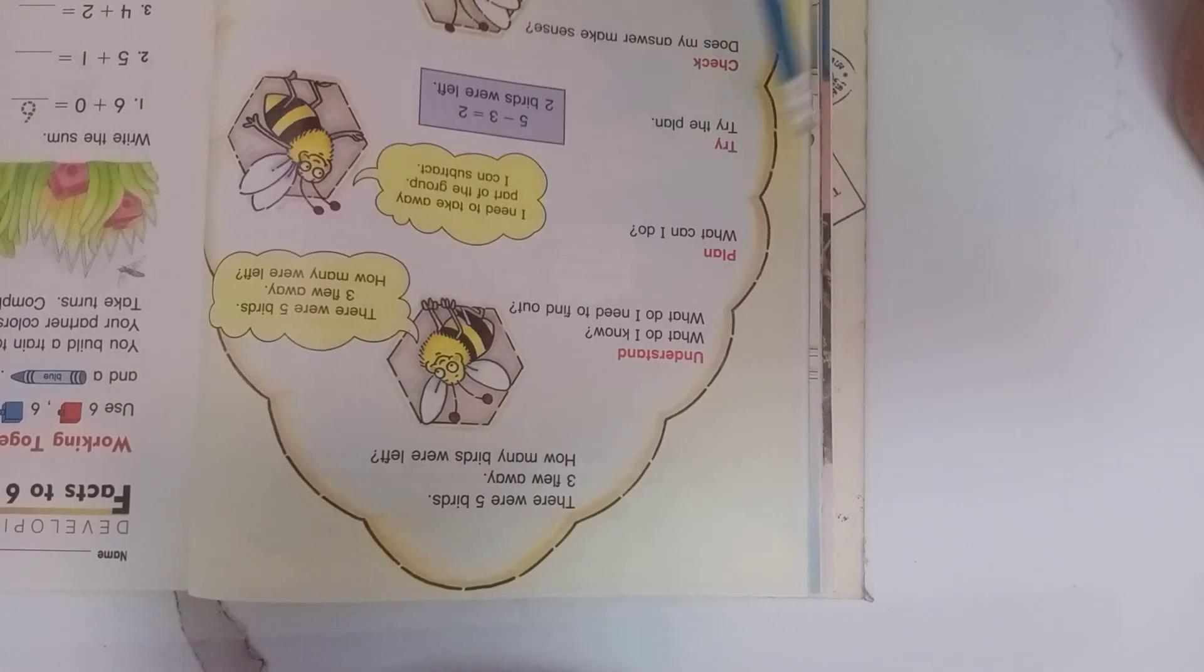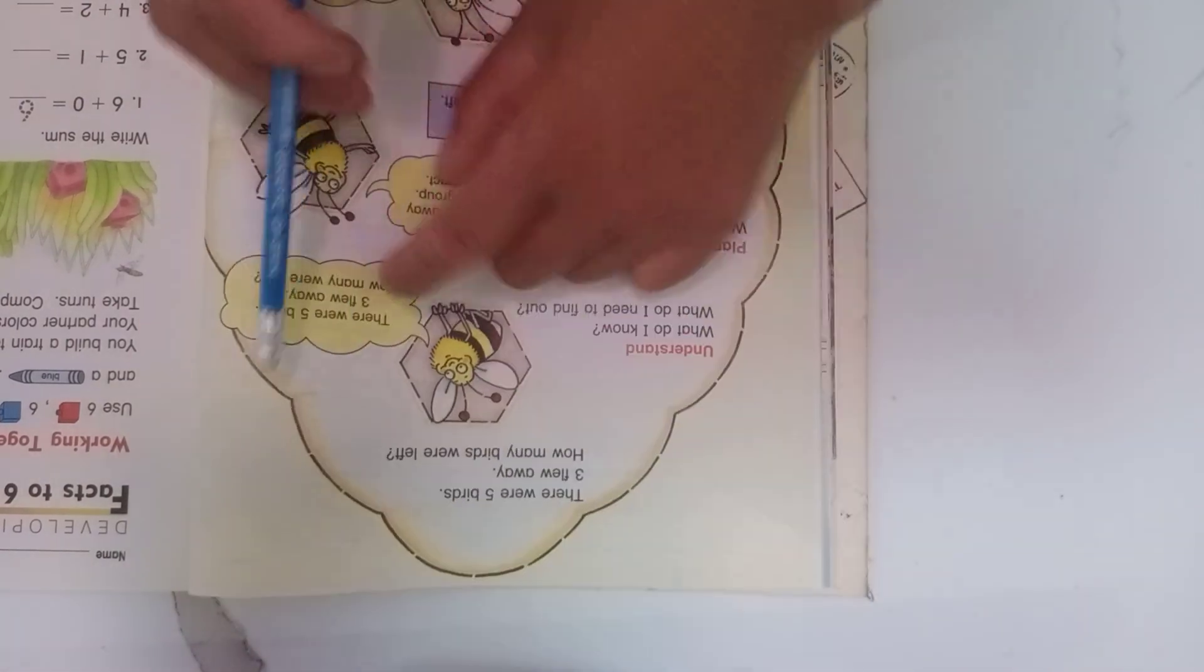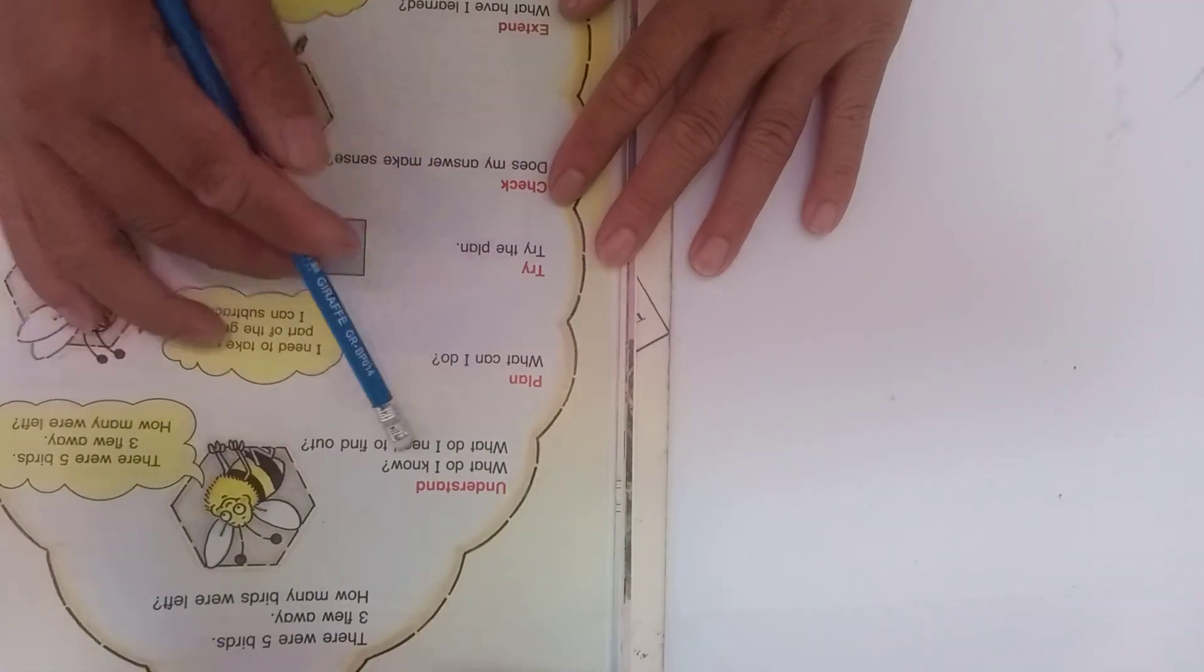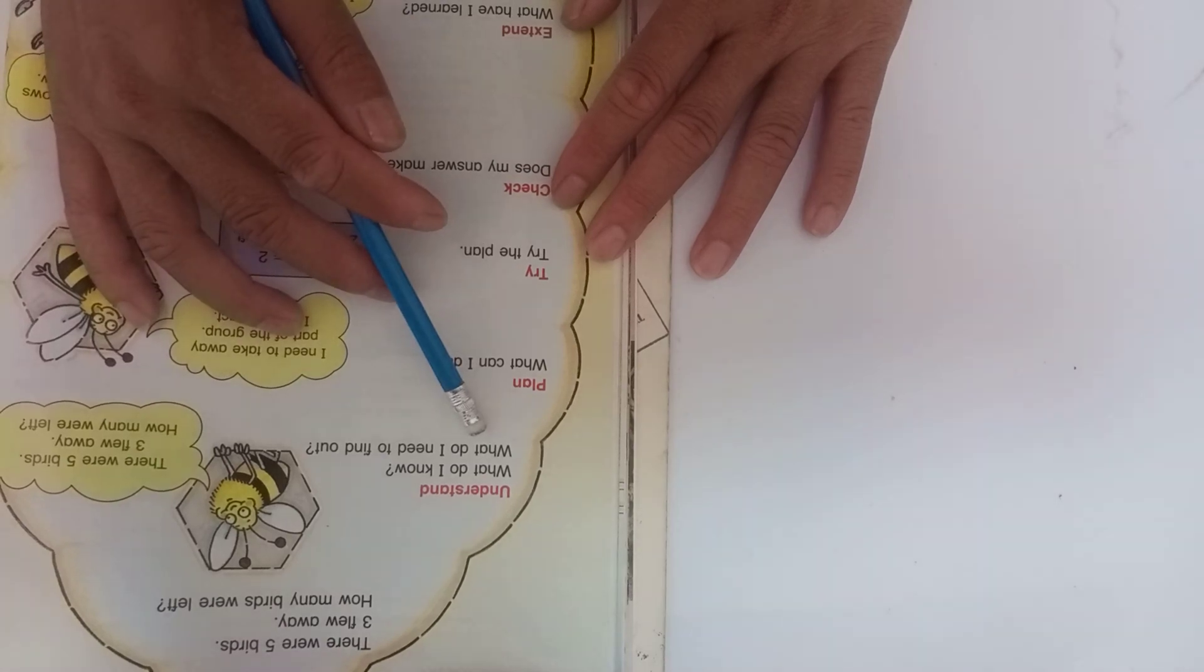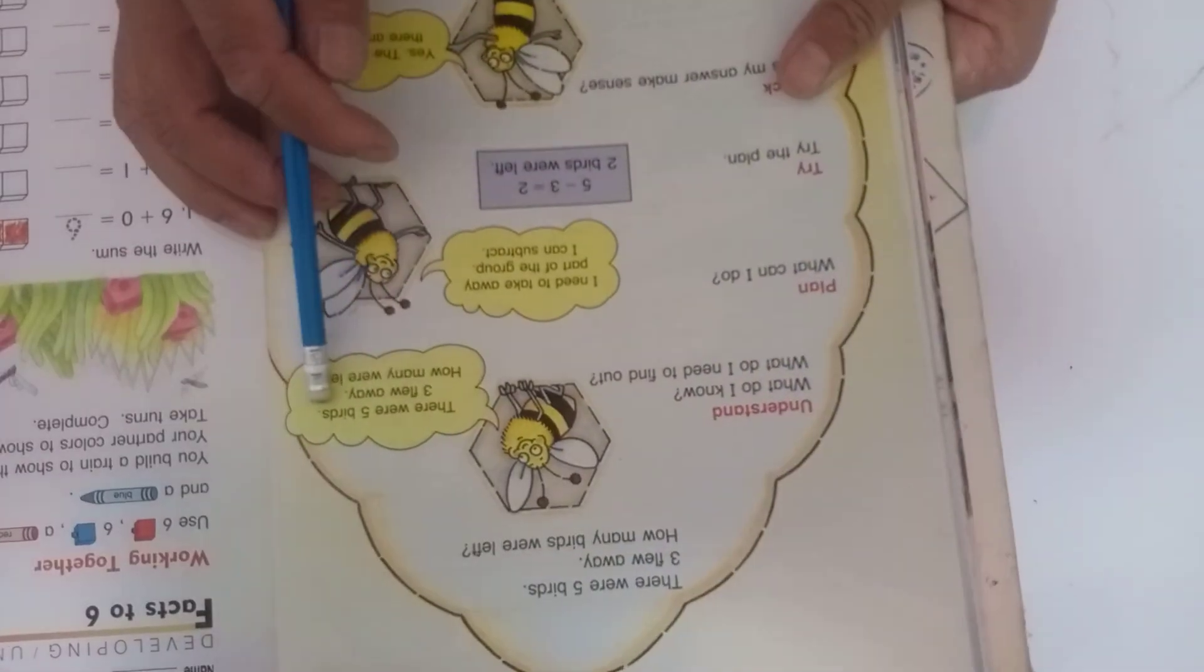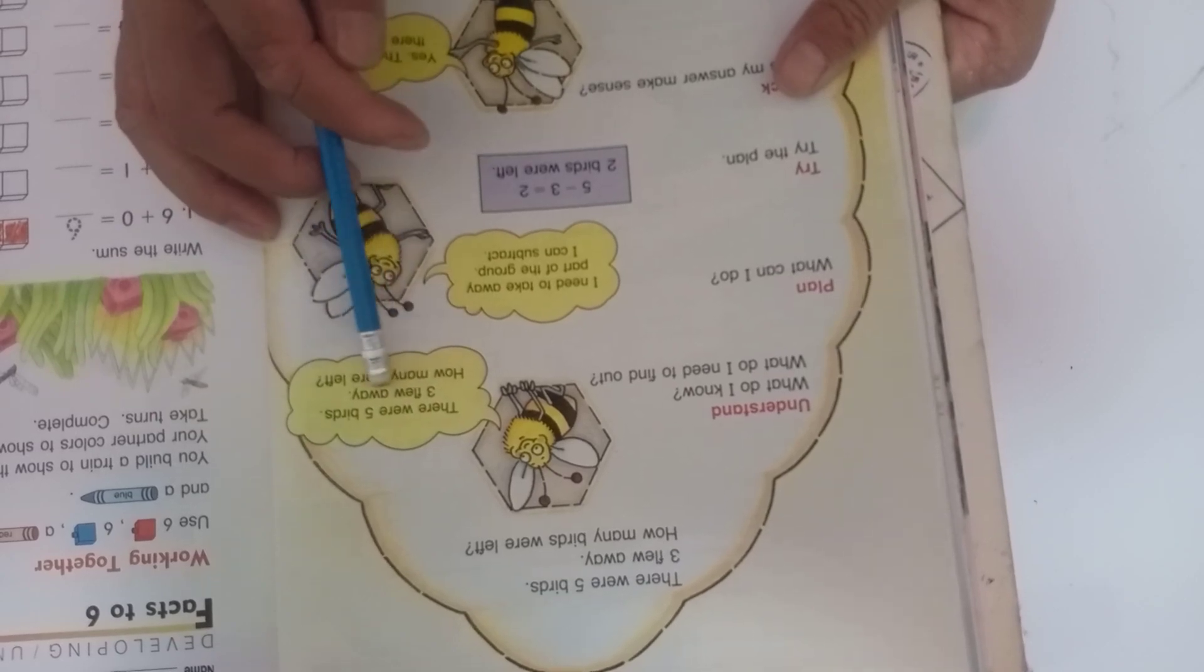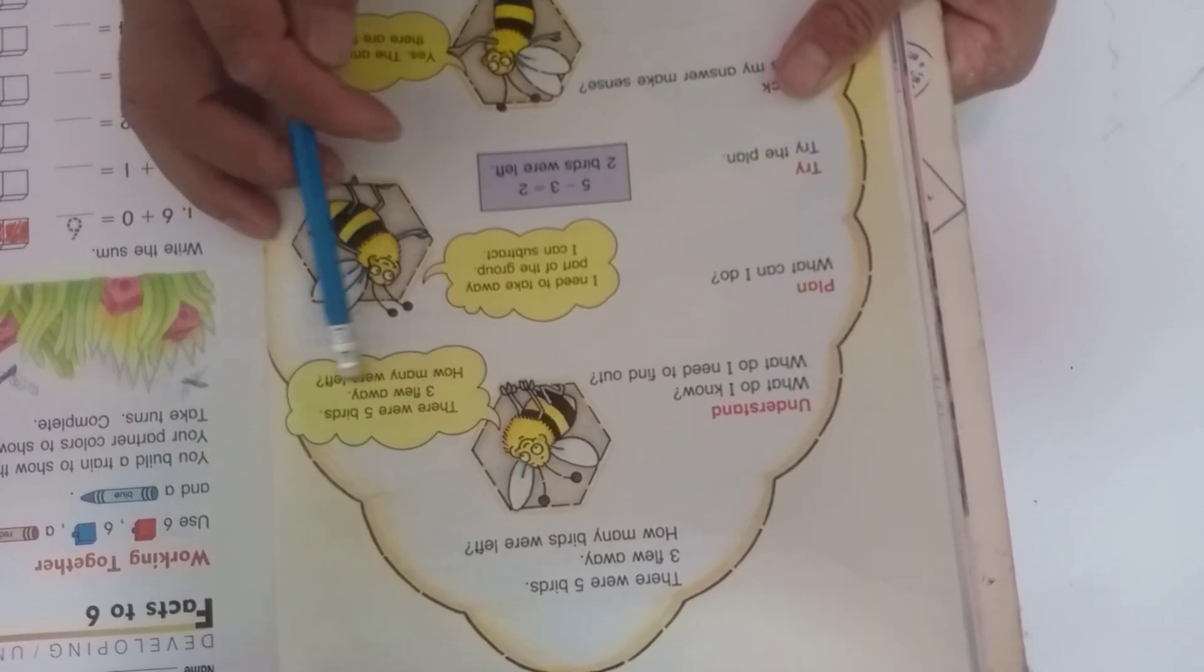Three flew away. You can answer yourself - it's two. So you can see together. What do I know? What do I need to find out? There were five birds, three flew away, how many were left?